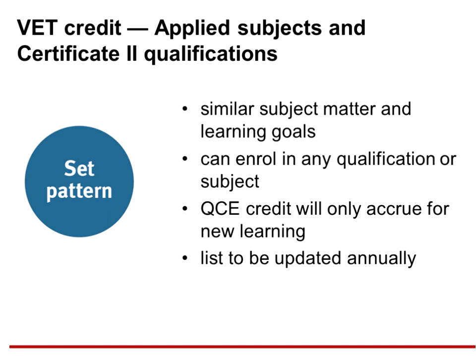The table published in the QCE and QCIA Policy and Procedures Handbook, as well as on the QCE credit and duplication of learning fact sheet on the website, provides the current list of applied subjects and Certificate II qualifications that QCAA has identified as a duplication of learning. Students may enrol in any subject or course, however QCE credit will accrue only where new learning occurs. For example, if a student completes Hospitality Practices and also successfully completes a Certificate II in Hospitality, a maximum of four credits would accrue — credit accruing for either the applied subject or the Certificate II qualification, whichever is to the benefit of the student. A student cannot accrue two credits for Unit 1 and Unit 2 of an applied subject and two credits by completing 50% of a Certificate II — that would be a total of two credits, not four, due to the identified duplication.